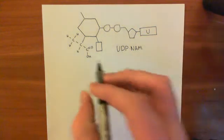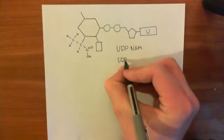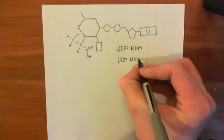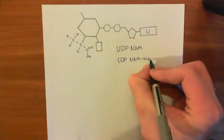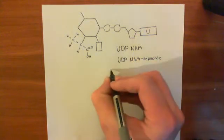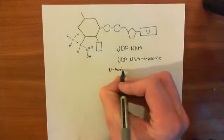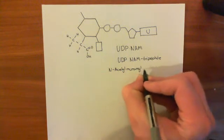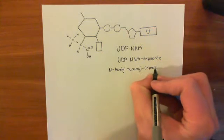What we're now going to do is convert this to what is known as UDP-N-acetylmuramic acid tripeptide, or N-acetylmuramyl tripeptide. So you'd write this as N-acetylmuramyl tripeptide. That's what we're going to convert it to.